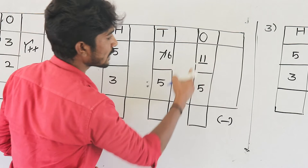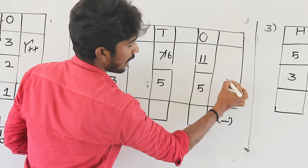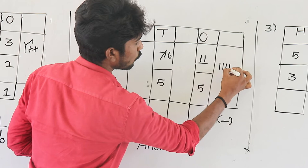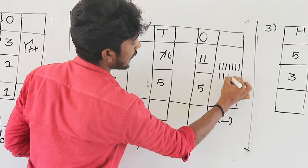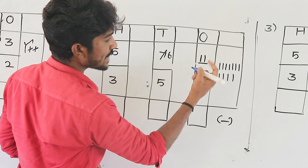So the first number is now 11. Draw 11 lines: 1 through 11. Next, the second number is 5, so cancel 5 lines: 1 through 5.